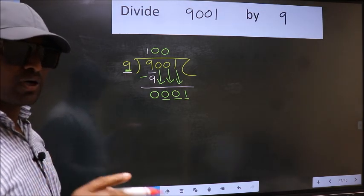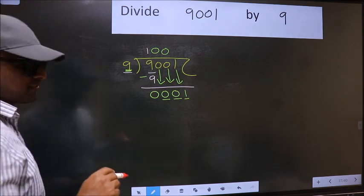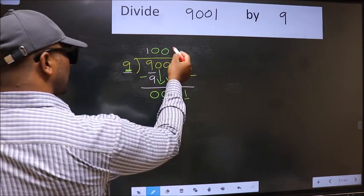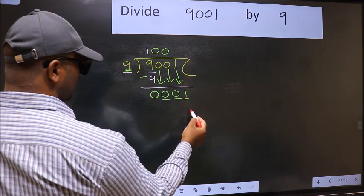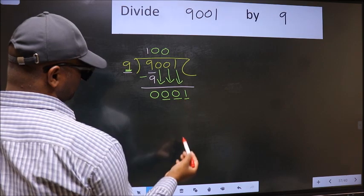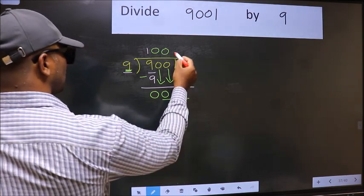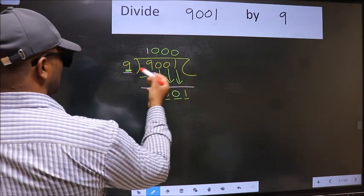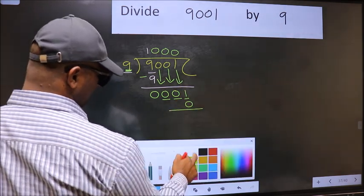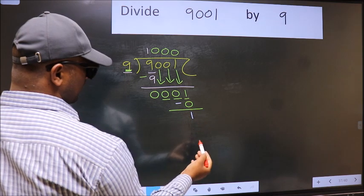Instead of that, what you should think of doing is which number should we take here. If I take 1 we will get 9. But 9 is larger than 1. So what we should do is we should take 0. So now we should subtract, we get 1.